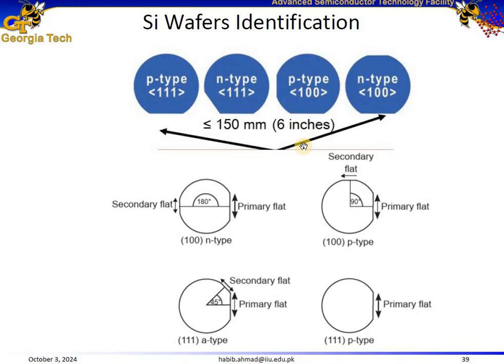For wafers having diameters less than 150 mm, or 6 inches, flats on the edge of the wafers are used to indicate both the crystal orientation and the doping type. We can categorize the flats into primary flats, as indicated over here.